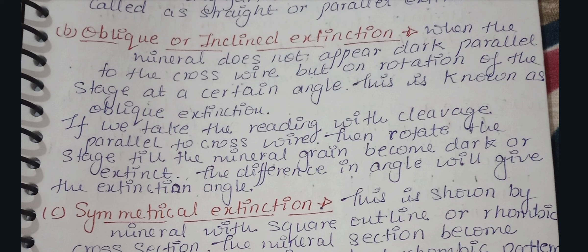In this case, you will not see extinction until you rotate the stage. If you rotate it to a particular angle, it will show extinction and appear dark. Whenever a mineral appears dark, that indicates it is showing extinction. We take the reading with cleavage parallel to the cross wire, then rotate the stage until the mineral becomes dark. The difference in the angle gives the extension angle.